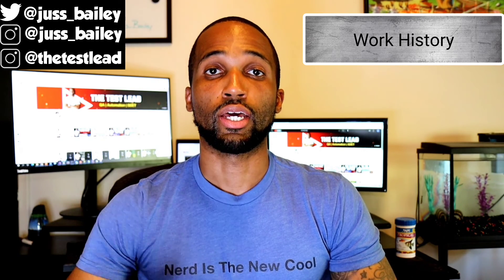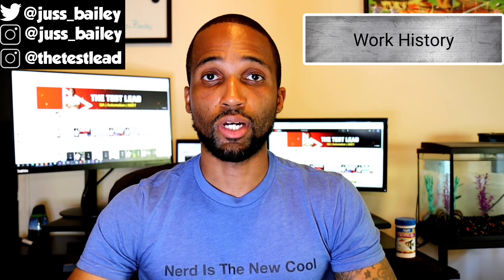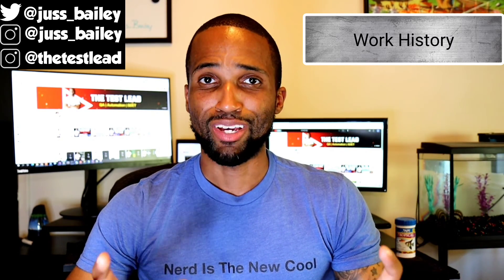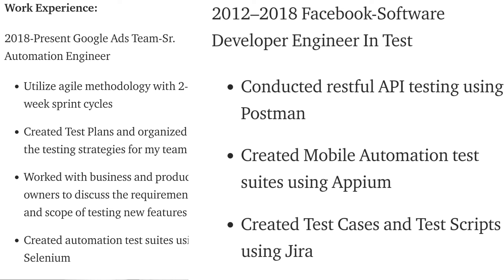Be brief when listing your job history descriptions — stick with the relevant information. If a previous job involved X, Y, and Z but your new role only cares about X, put X first to emphasize it. Use action verbs such as 'created' or 'developed' when describing past experiences. For example: '2018 to present — Google Ads Team, Senior Automation Engineer. I utilized agile methodology with two-week sprint cycles, created test plans and organized testing strategies for my team, worked with business and product owners to discuss requirements and scope of testing new features, and created automation test suites using Selenium.'